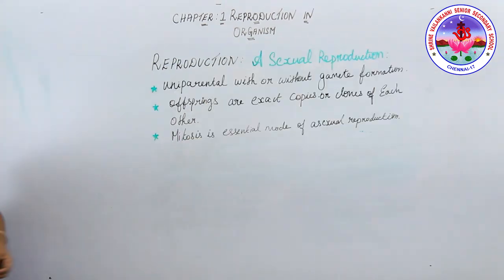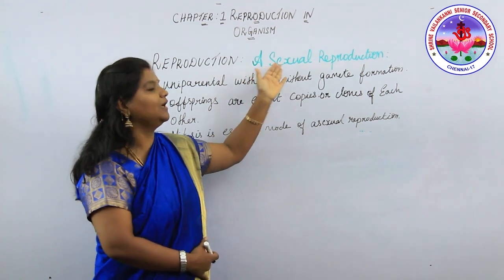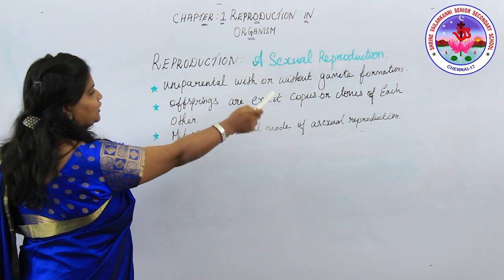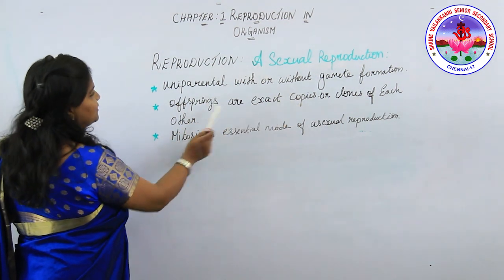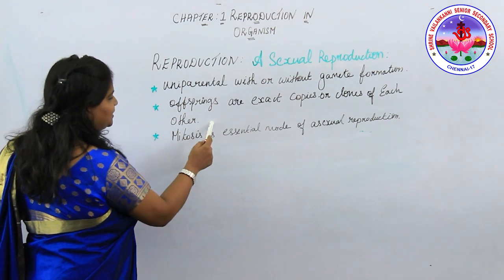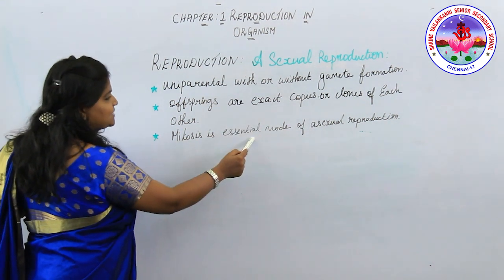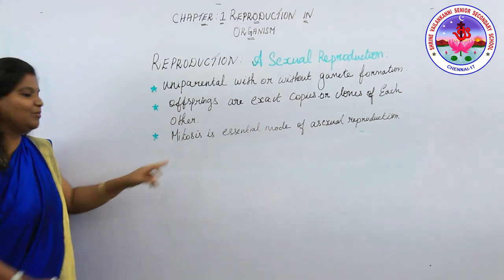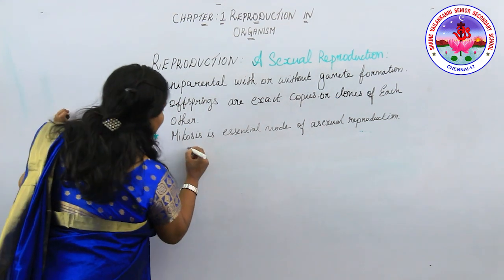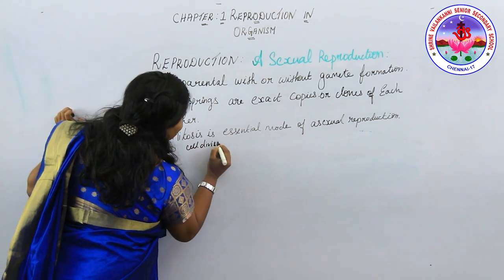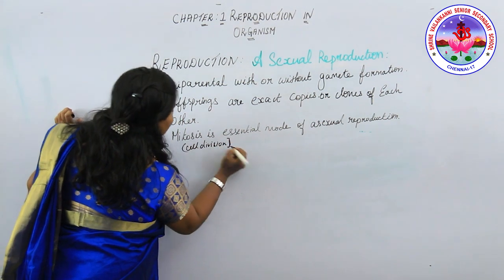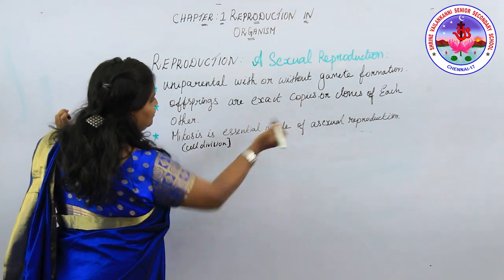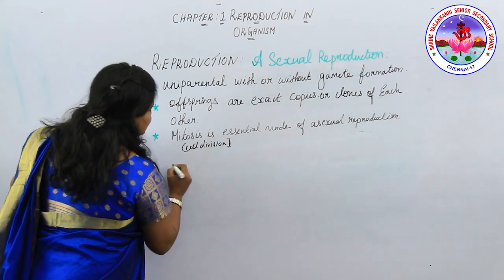In asexual reproduction, it is uniparental, with or without gamete formation. Offspring are exact copies or clones of each other. Mitosis is the essential mode of asexual reproduction — cells divide rapidly, and multiplication of cells is a very fast process.